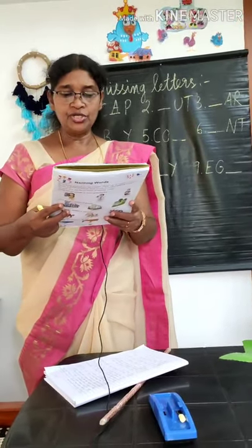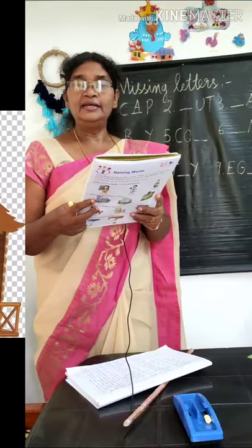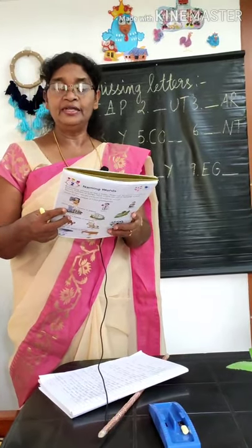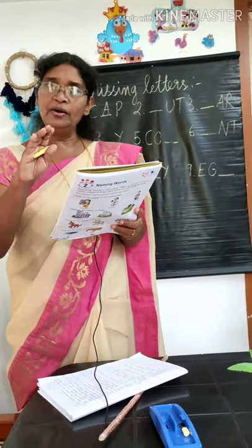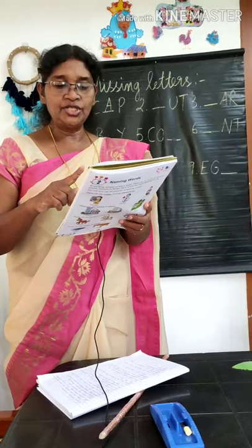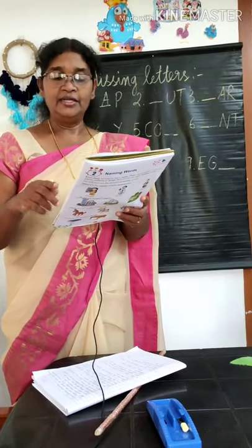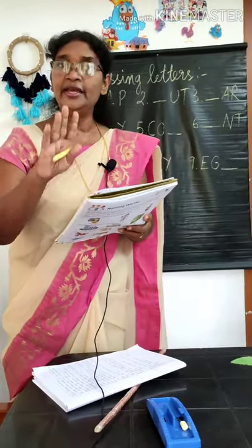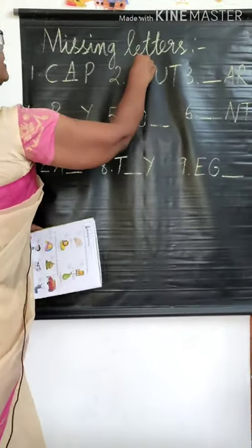Second one is dash-U-T. Which word is that? HUT. Hut means small house. H, U, T. The missing letter is H. Write capital letter H.